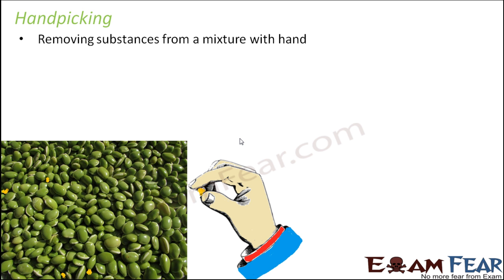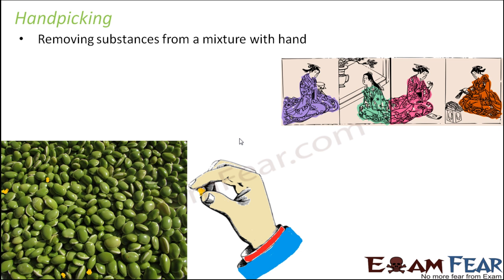For example, imagine you are given a bowl full of pulses and you have to pick the undesirable particles out of them. The yellow colored things shown are the undesirable particles — each single one needs to be picked up individually. So it is definitely going to be time-consuming, and being a manual process, it is also boring and tiring.